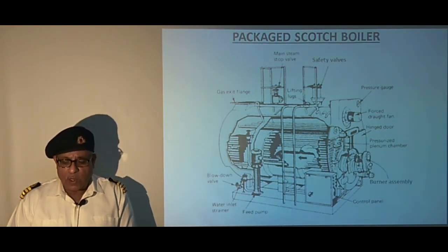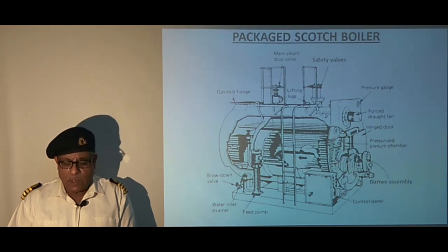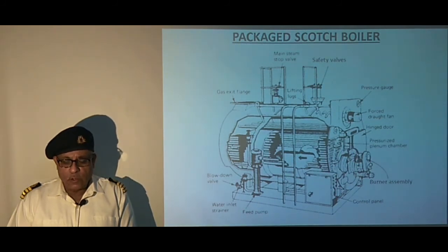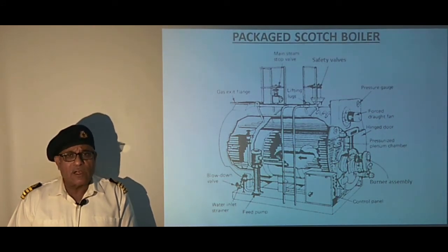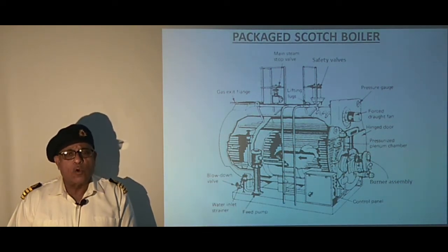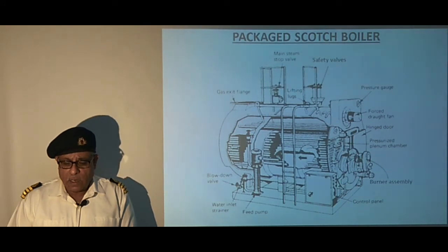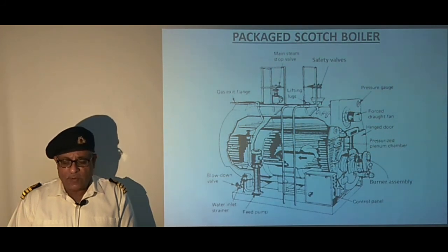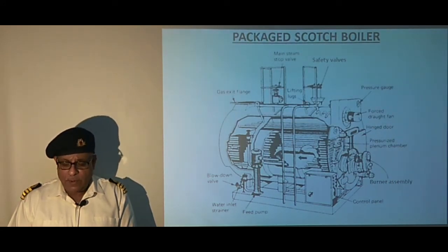To relieve internal pressure, the boiler is equipped with an improved high-lift safety valve with an easing gear arrangement. The blow down valve used to be a non-return type to prevent entry of sea water, as earlier boilers were installed below the load water line. Nowadays boilers are installed above the water line, and the blow down valve is connected with an internal pipe to completely empty out the boiler when required.